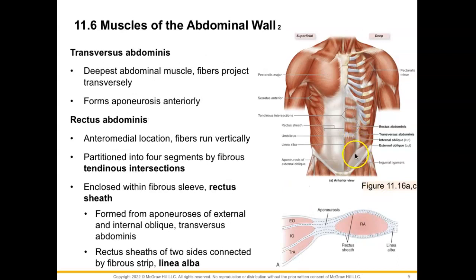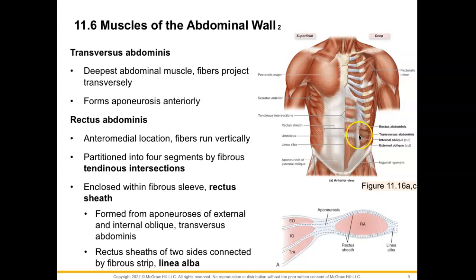For our last layer, the transversus abdominis — we just see a little window cut out here — is found deep to the internal oblique muscle. We see that the fibers are moving transversely, and it too is going to form an aponeurosis anteriorly.